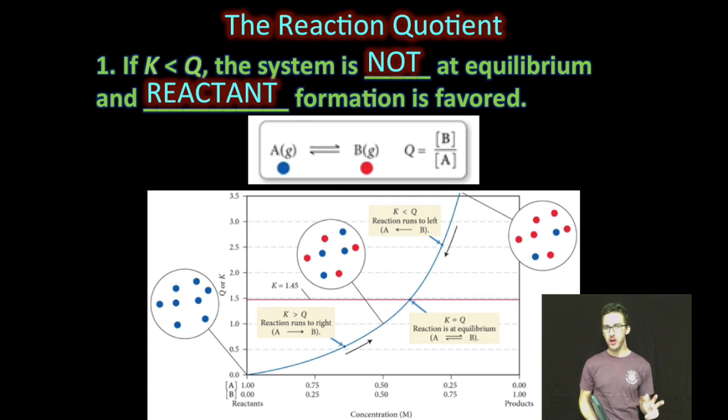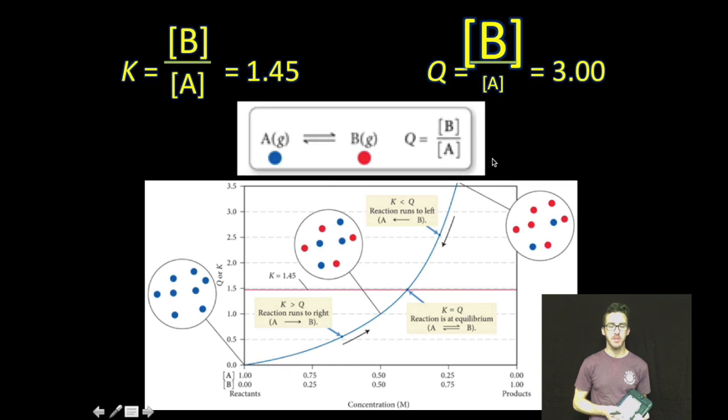Okay, so first scenario, if K is less than Q, the system is not at equilibrium and reactant formation is favored. Now take a moment to look at this generalized reaction. Reactants A are represented by these little blue dots, products B are represented by these little red dots. And let me give you some sample data in which K is less than Q.